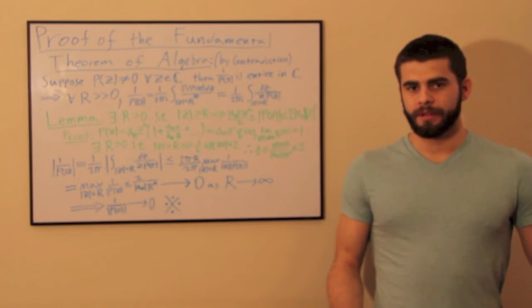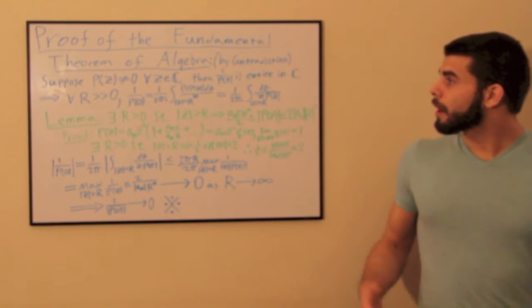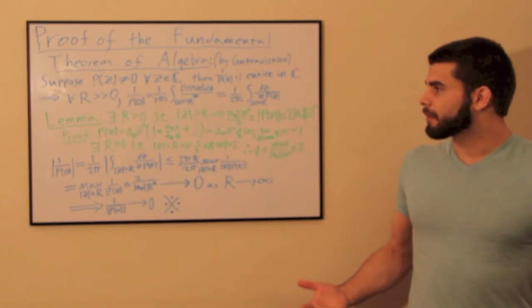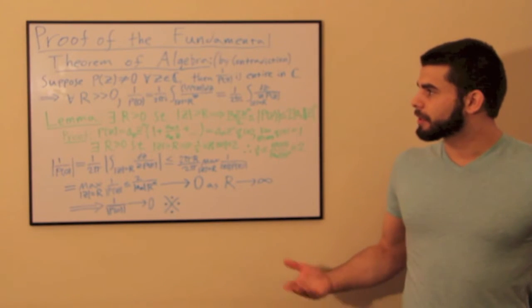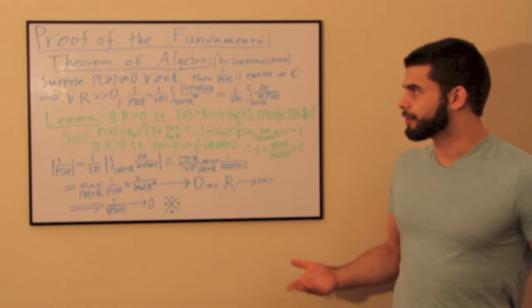Once we understand these two theorems, we can use them to prove the Fundamental Theorem of Algebra. This proof is a proof by contradiction, wherein we suppose that there is, in fact, a polynomial that has no zero solution in the complex plane.